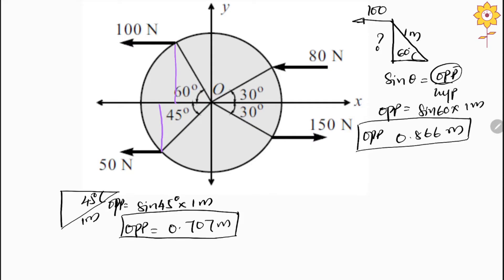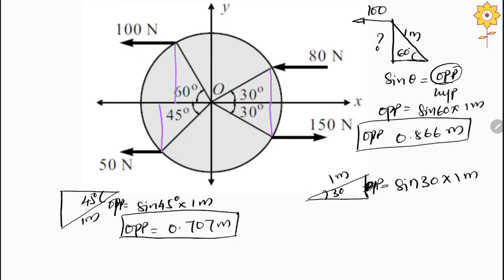For the next diagram, if we draw the perpendicular line, both triangles have the same 30-degree angle. So we solve it once: sin 30° × 1 meter gives the opposite side. Sin 30° is 0.5, so this opposite side is 0.5 meter.